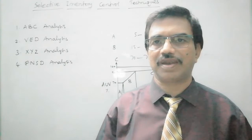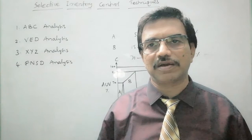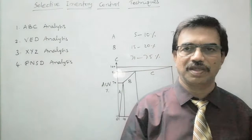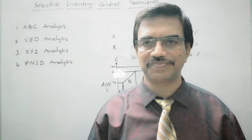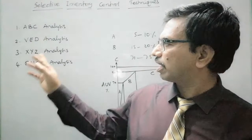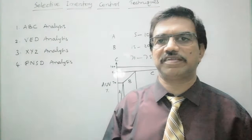Whereas Desirable items are those whose non-availability will neither stop the production system nor affect its efficiency. So if such items are available, it's good; otherwise, it's not a problem. These items are Desirable. This is how we can classify items in VED analysis.